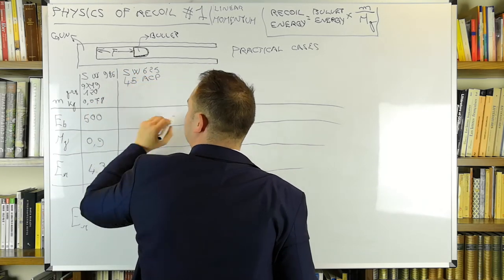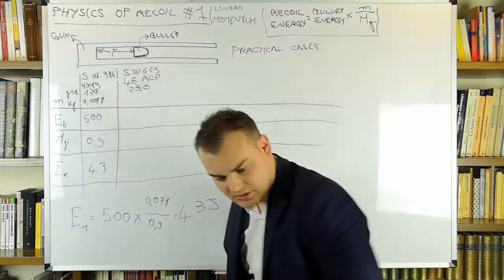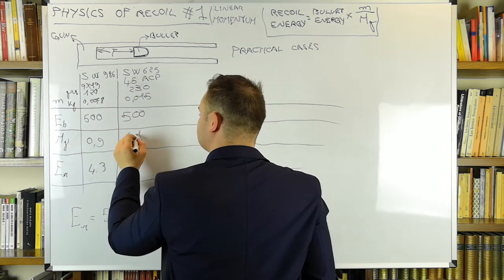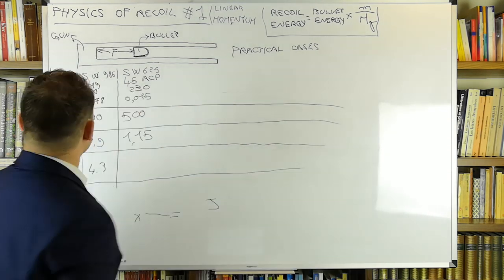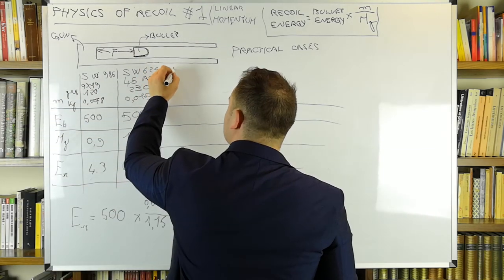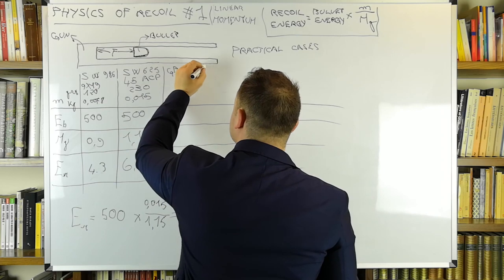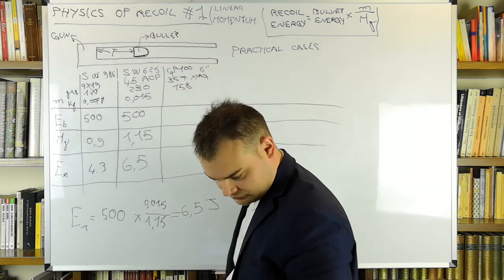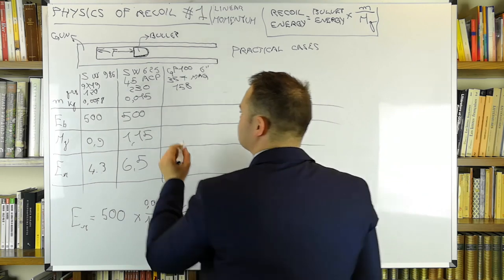Next, a .45 ACP with the same kinetic energy of the 9x19, with the usual 230 grain bullet from a gun weighing 1.15 kilos. We repeat the calculation and we get a recoil energy of 6.5 joules. That's interesting. The kinetic energy of the bullet is the same as the 9mm, but the recoil energy is much higher.